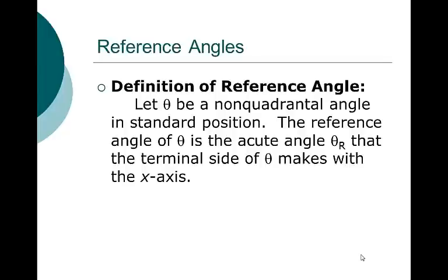Here's the definition of a reference angle. Let theta be a non-quadrantal angle — remember, quadrantal angles are 0, 90, 180, 270, 360. So let theta be a non-quadrantal angle. The reference angle of theta is the acute angle, theta sub r, that the terminal side of theta makes with the x-axis — either the positive or the negative x-axis. We always draw back down to the positive or negative x-axis, so your answer is always acute and always positive.